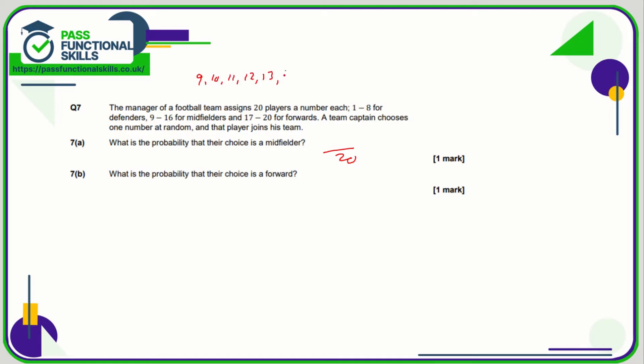Let's just double check: 1, 2, 3, 4, 5, 6, 7, 8. And that's 8 out of the 20, 4 out of 10, 2 out of 5. Any of these answers is acceptable.